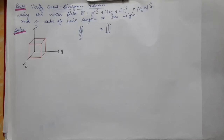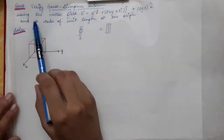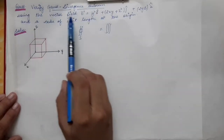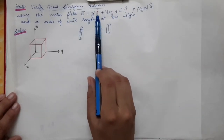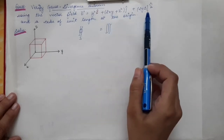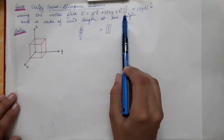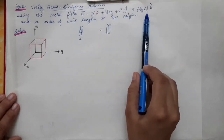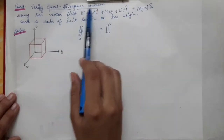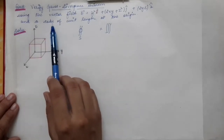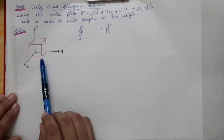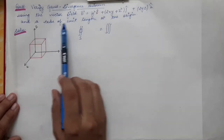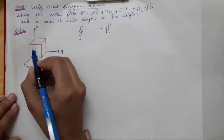We are going to verify the Gauss Divergence Theorem using an example. The vector field E is given as y² î + (2xy + z²) ĵ + 2yz k̂, with x, y, and z components respectively. The volume given is a cube of unit length placed at the origin, so each side is equal to one unit.